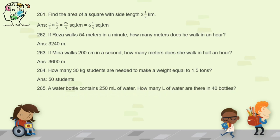Question 265: a water bottle contains 250 ml of water — how many liters of water are there in 40 bottles? First multiply 40 by 250 to get the answer in milliliters, then divide by 1,000 to convert to liters. 40 times 250 equals 10,000 ml, and 10,000 divided by 1,000 equals 10 liters.